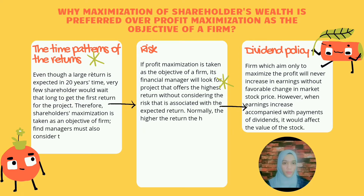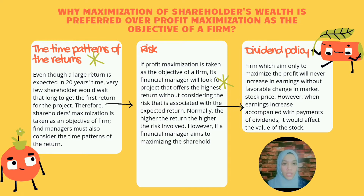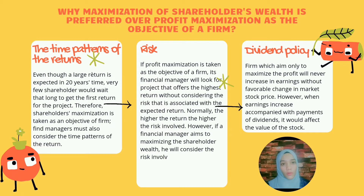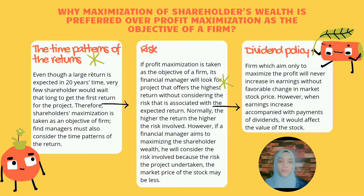Number two, risk. If profit maximisation is taken as the objective of a firm, a financial manager will look for a project that offers the higher return without considering the risk associated with the expected return. Normally, the higher the return, the higher the risk involved. However, if a financial manager aims to maximise the shareholder wealth, he will consider the risk involved because the higher the risk of the project undertaken, the market price of the stock may be less.